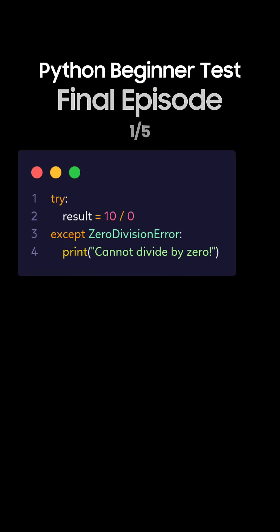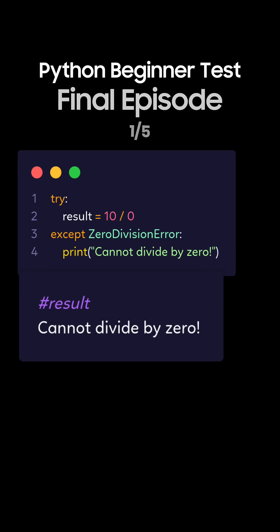Question 1: What's the output of this Python code using try-except? This is the correct answer. The code will raise a ZeroDivisionError because of division by zero, and the except block will catch it and print cannot divide by zero.